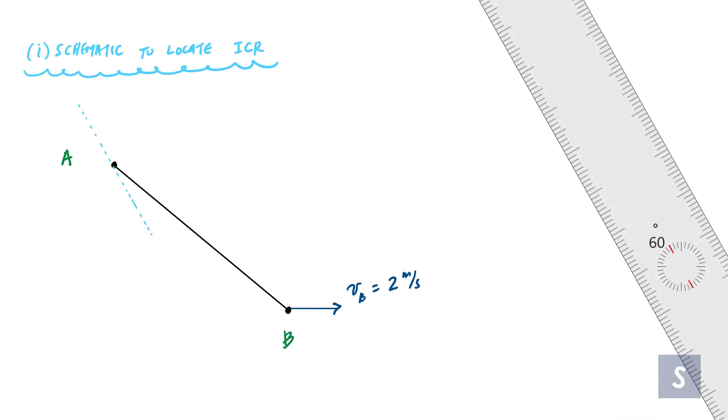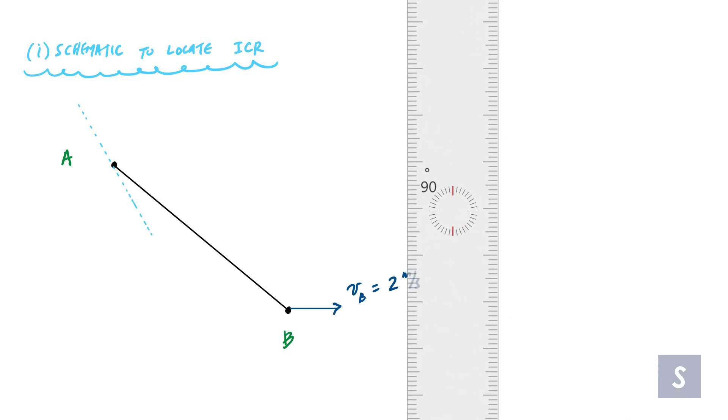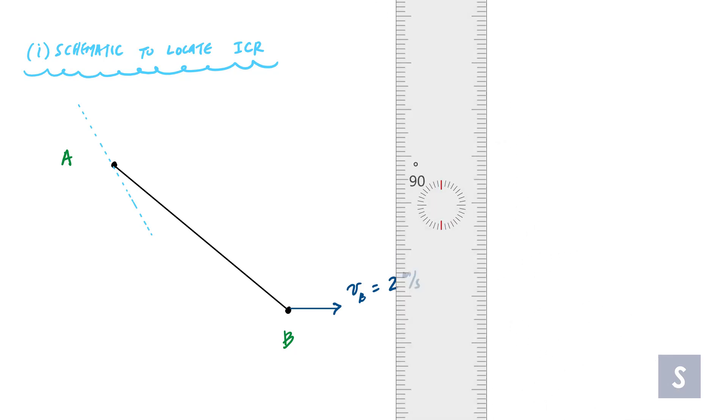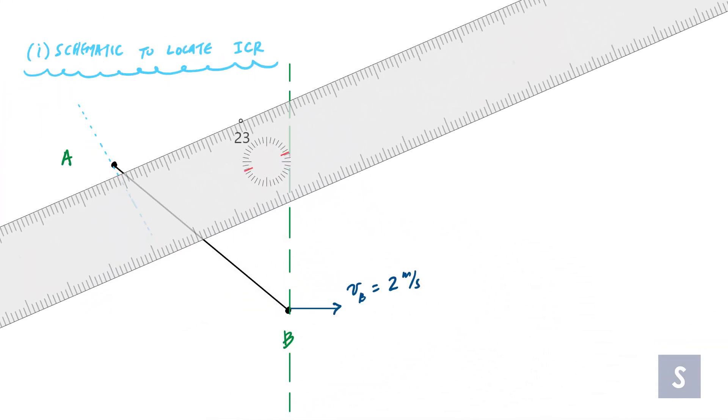Now, if I know the direction of the velocity vectors, in order to locate the instantaneous center of rotation, one of the first things I want to do is draw a line perpendicular to the tail of each velocity vector. So my VB is two meters per second. So my line perpendicular would look like this. And I will use the color green.